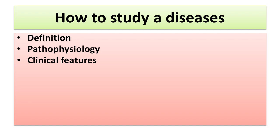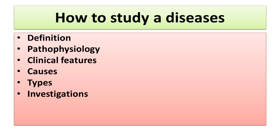Next, you should know the clinical features of the disease — that is, the signs and symptoms. Signs are all those things which you observe in the patient, and symptoms are all those things which the patient tells you. You should also know the causes of the disease, the types of the disease, and what are the possible investigations — for example, taking the patient for X-ray, doing a CBC, and so on.